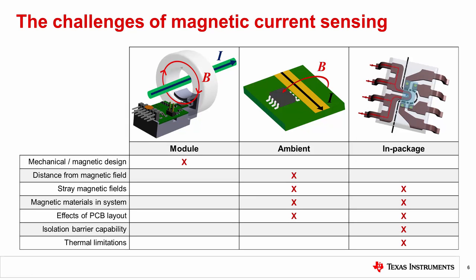What are some of the challenges facing magnetic current sensing? When developing a module, a significant level of mechanical and magnetic design is needed, which may be unfamiliar territory for engineers that typically work in the electrical domain. While it can create a powerful sensing solution, the complexity and cost associated with module design make it prohibitive for many applications. Ambient sensors are affected by the distance from the magnetic field generated by the current carrying conductor, while ambient and in-package types are both susceptible to interference from stray magnetic fields, other magnetic materials in the system, and the layout of the printed circuit board. In-package magnetic current sensors have a couple more unique challenges, including capability of the isolation barrier and the thermal limits to its current measuring capabilities. Stray fields can be managed by using differential sensors or by shielding the sensor. More details about these challenges and how to manage them will be given in later videos in this series.